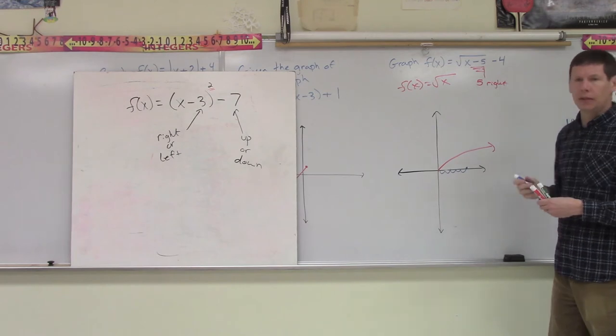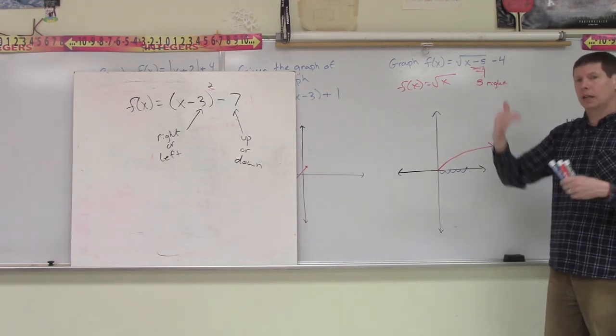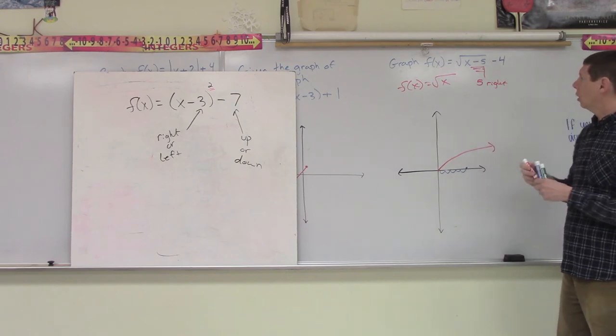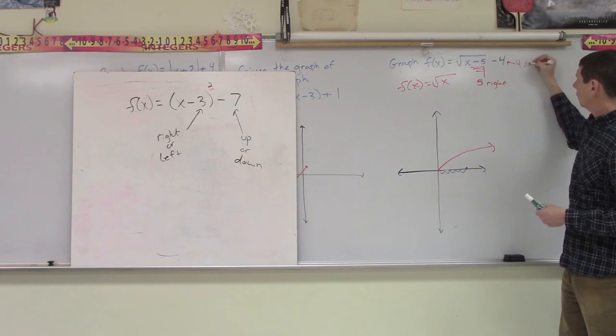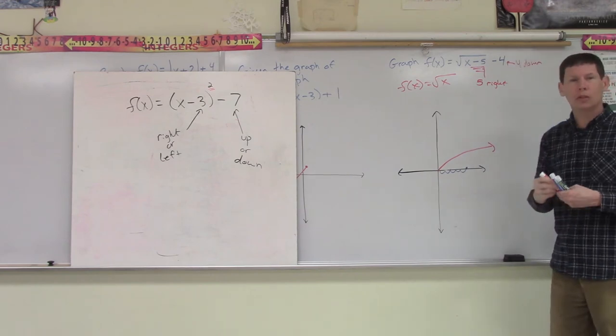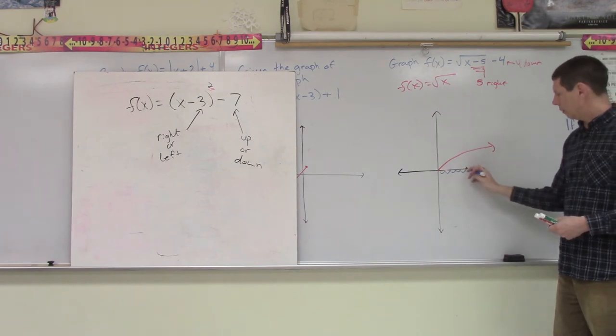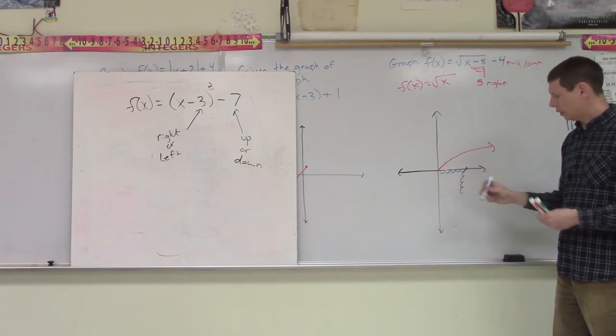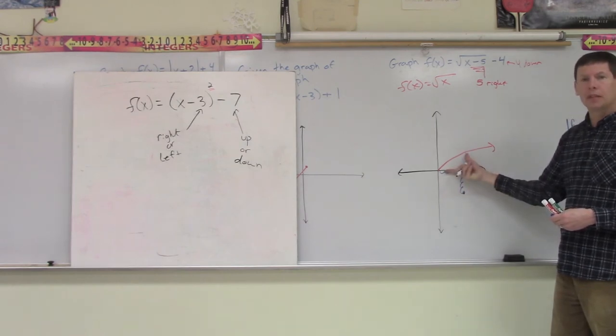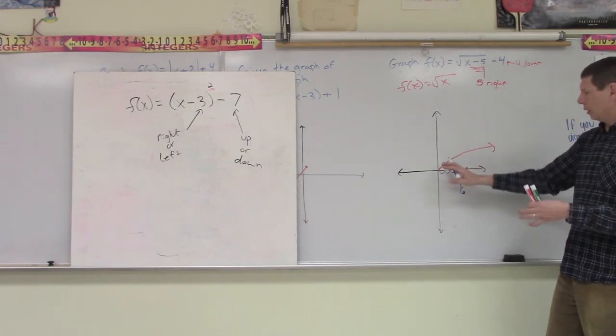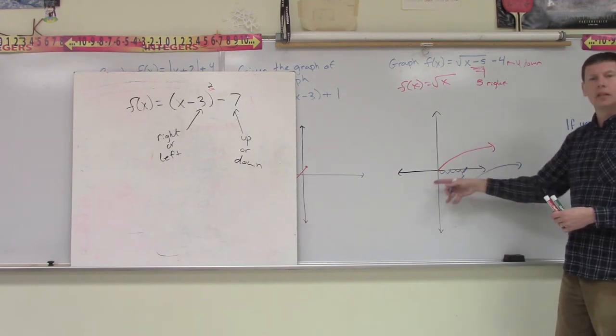But we have a number outside the function as well. And that's, again, our vertical translation. So now this number here tells us we're going to have to go 4 down. So now, after I move 5 to the right, I'm going to move 1, 2, 3, 4 down. And this is the point where this graph starts. And then we could copy it, mimic it, and have the curve move to the right. That's how we're doing, shifting right or left.